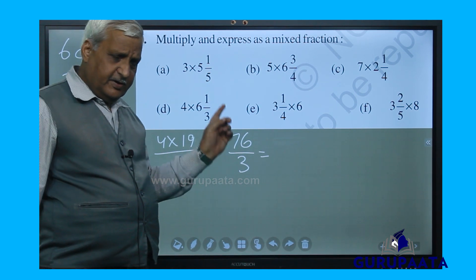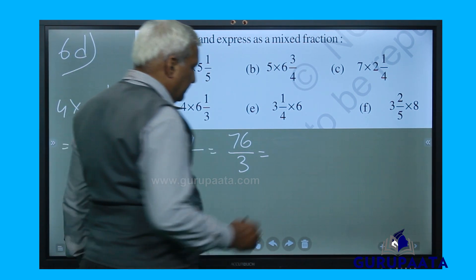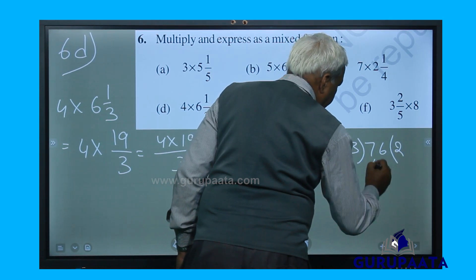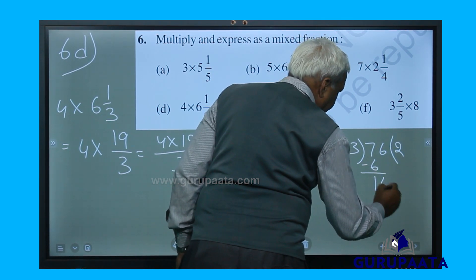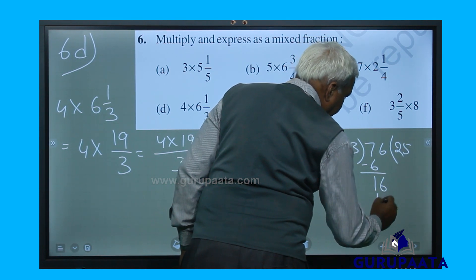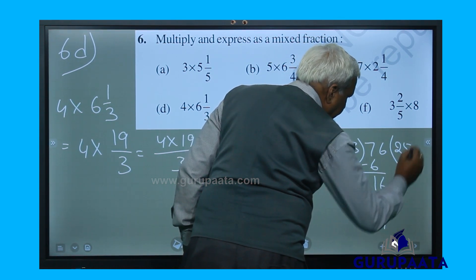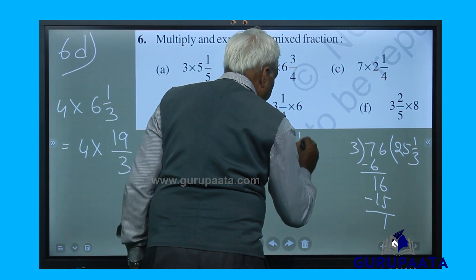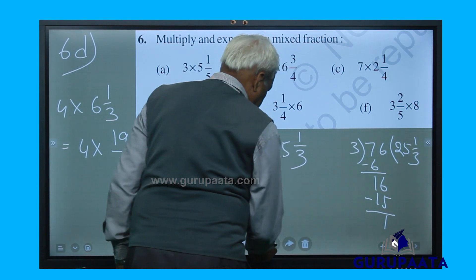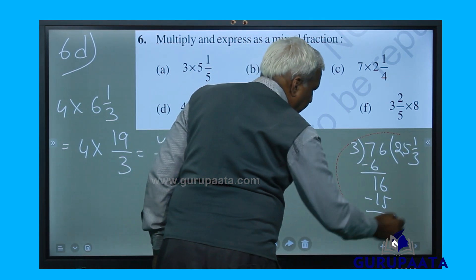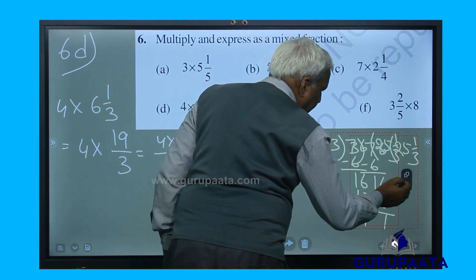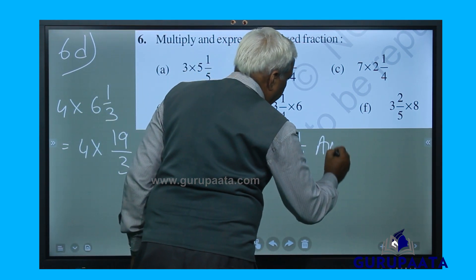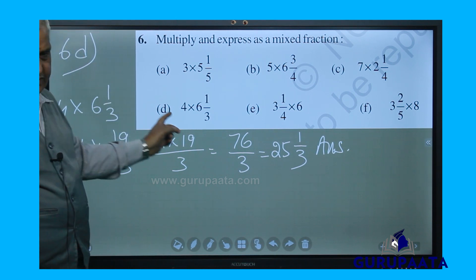76 by 3 is to be changed to a mixed number. Dividing: 3 twos are 6, 3 fives are 15, remainder 1. The answer is 25 and 1 by 3. To avoid confusion, I will delete this working. This is the only answer for question number 6d.